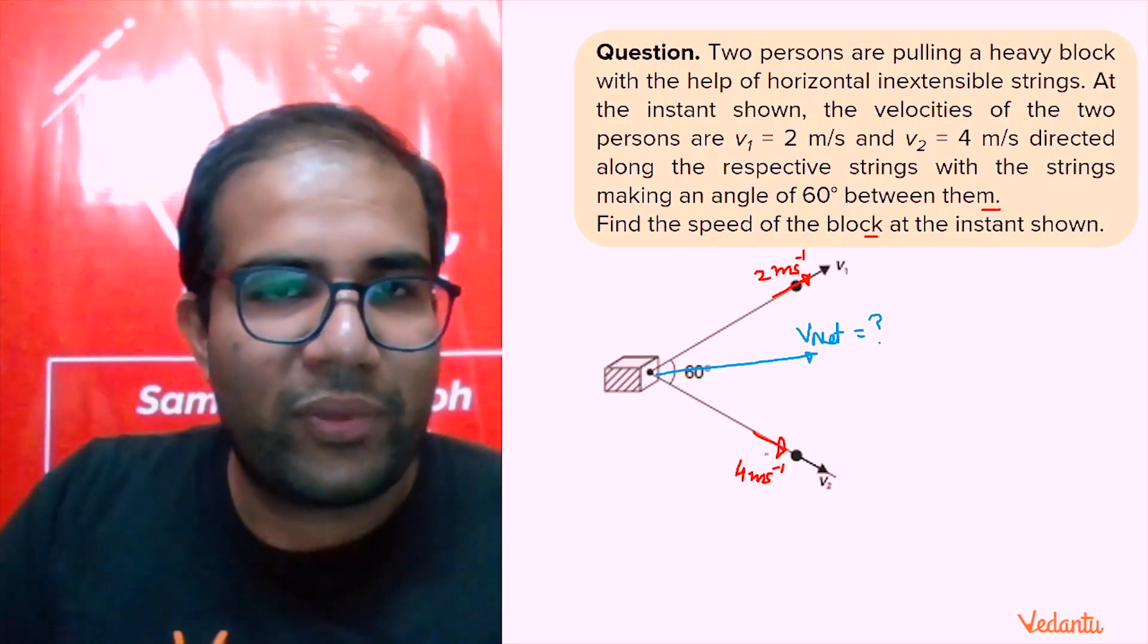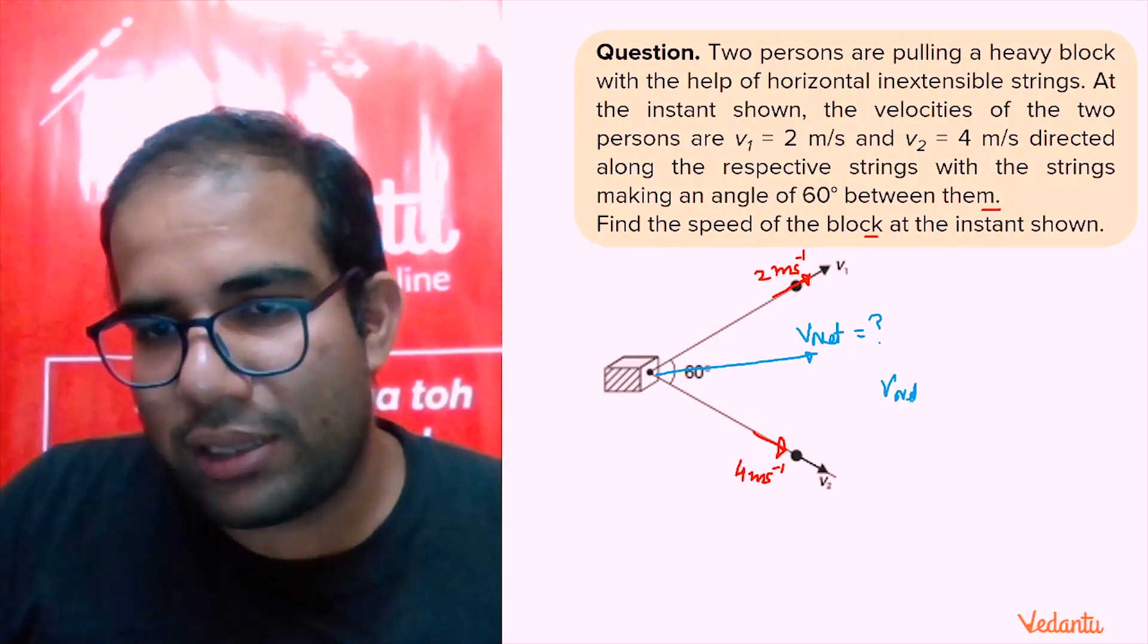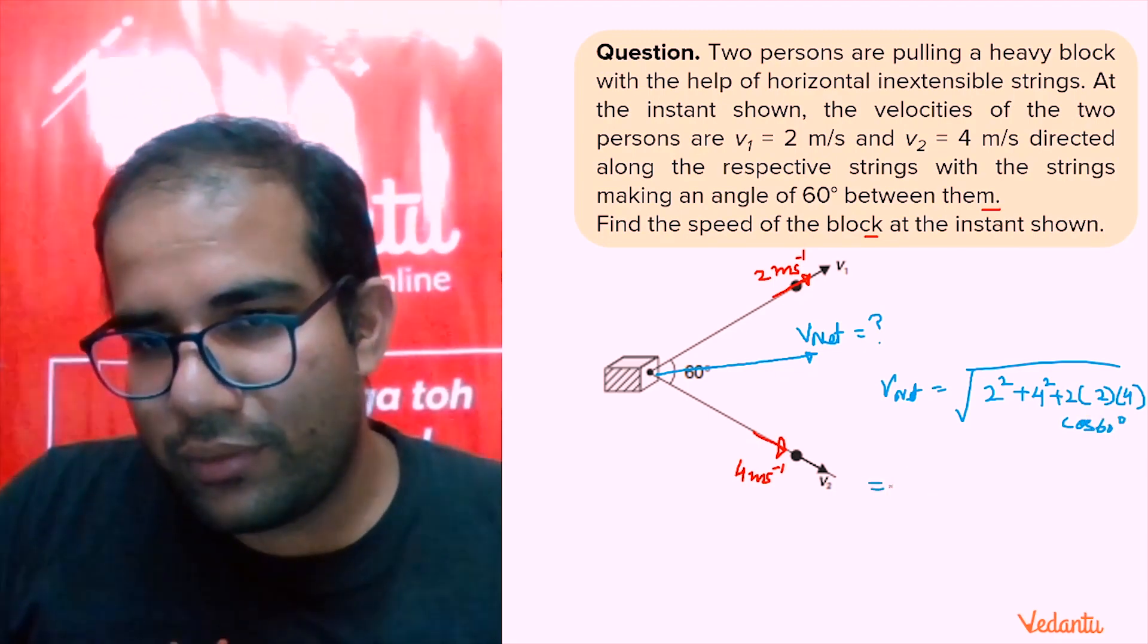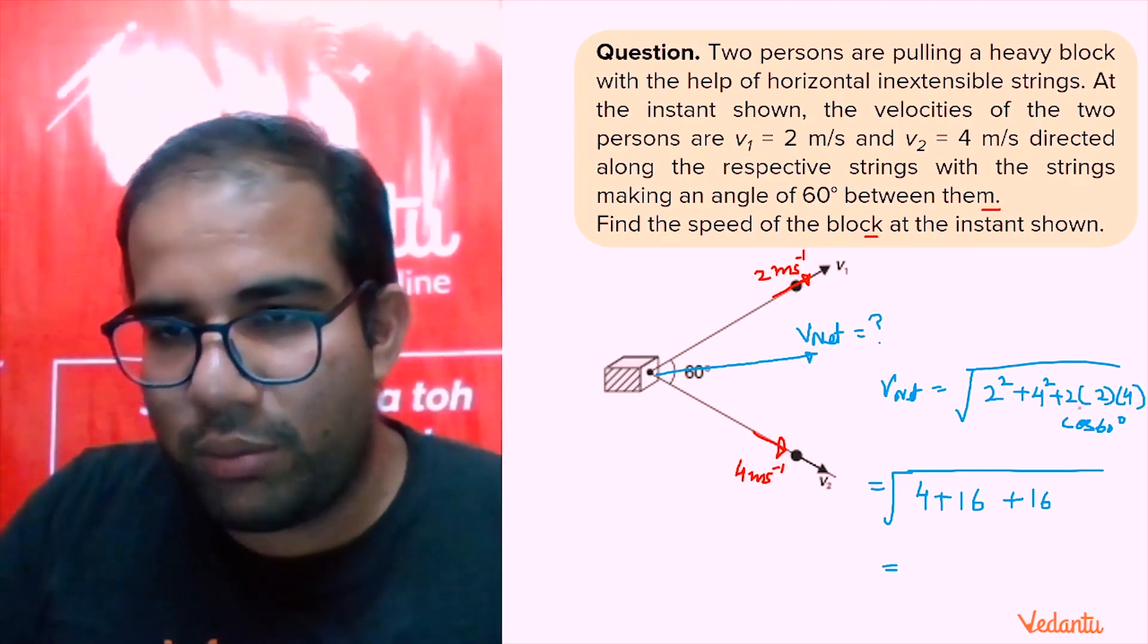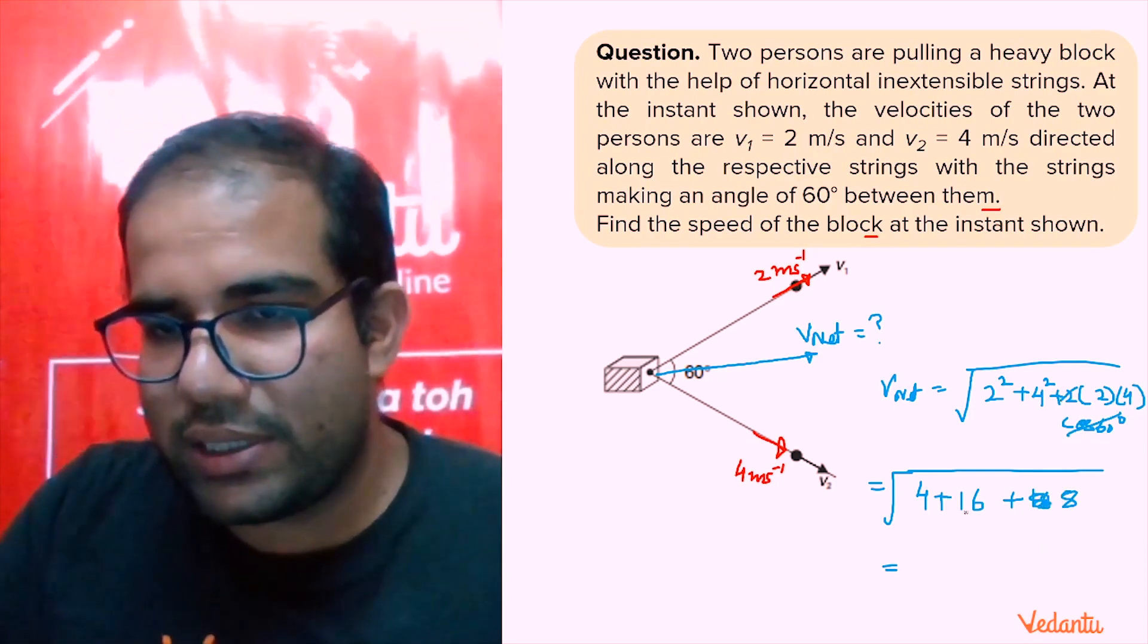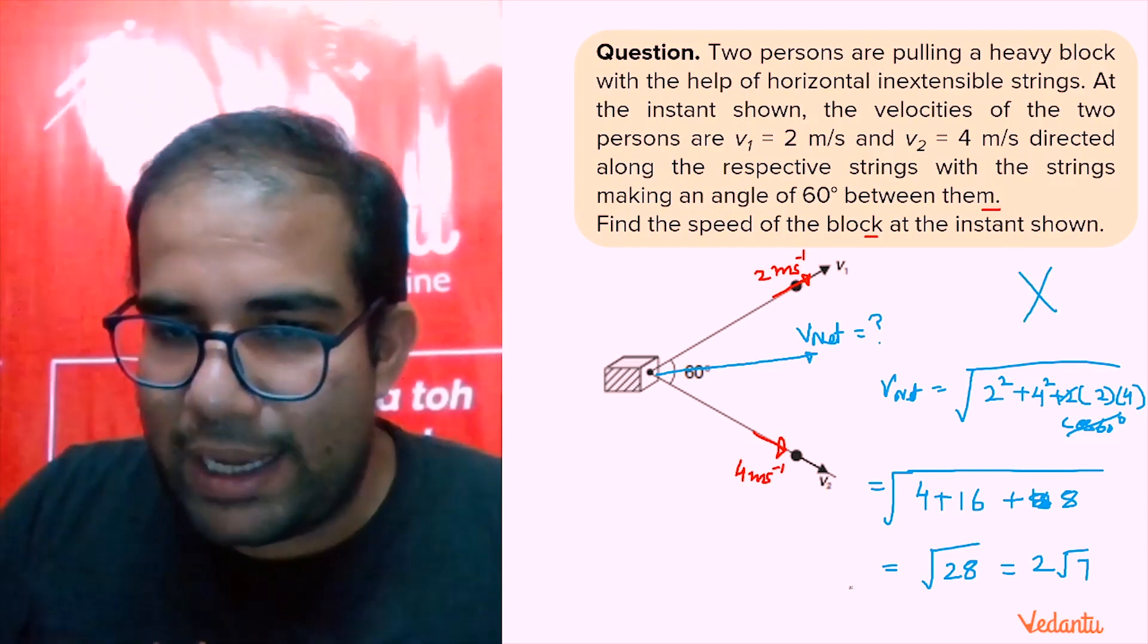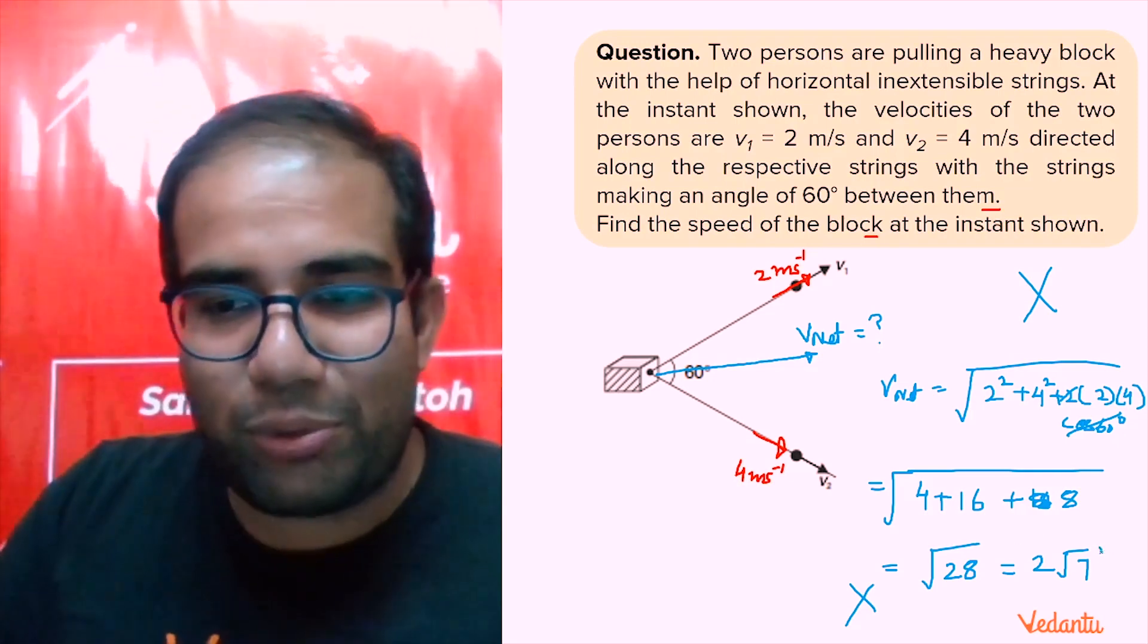The velocities of the strings are given as 2 meter per second and 4 meter per second, and the angle between them is 60 degrees. The question is: what is the speed of the block? Many students will think 'sir we know this, we will use the resultant formula.' So they will calculate: 2 squared plus 4 squared plus 2 into 2 into 4 into cos 60 degree, which gives 4 plus 16 plus 8 equals 28, so the answer is 2 root 7.